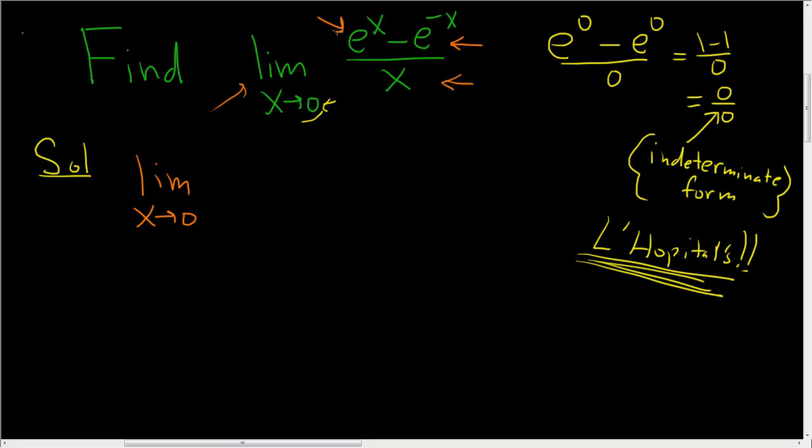So the derivative of e to the x is e to the x minus, and then the derivative of this guy right here. Well, that will be e to the negative x times the derivative of the inside piece. The derivative of the inside is just negative 1, right? That's the derivative of negative x. That was the chain rule.